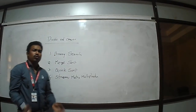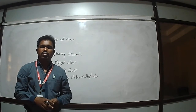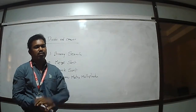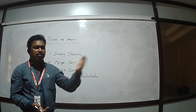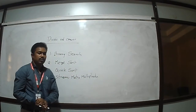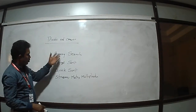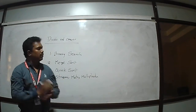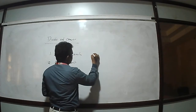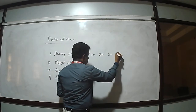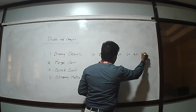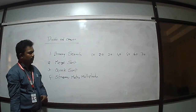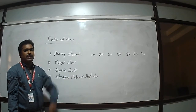Let's look at Binary Search. We know two types of searching techniques: Linear Search and Binary Search. Linear search is a sequential search and its efficiency is poor compared to binary search. In binary search, the list of elements is divided into two parts. For example, take the list: 10, 20, 30, 40, 50, 60, 70 — the problem size is 7 elements.